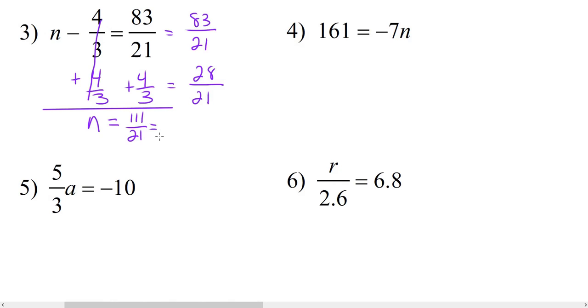Now 111 over 21 can be simplified because both of these numbers can be divided by 3. So that leaves us with the answer 37 over 7, and your answers must be in simplest form. Now we can leave this like this, or we can convert this to a mixed number. 7 goes into 37 five times, and 37 minus 35 is 2, so we end up with 5 and 2 sevenths.